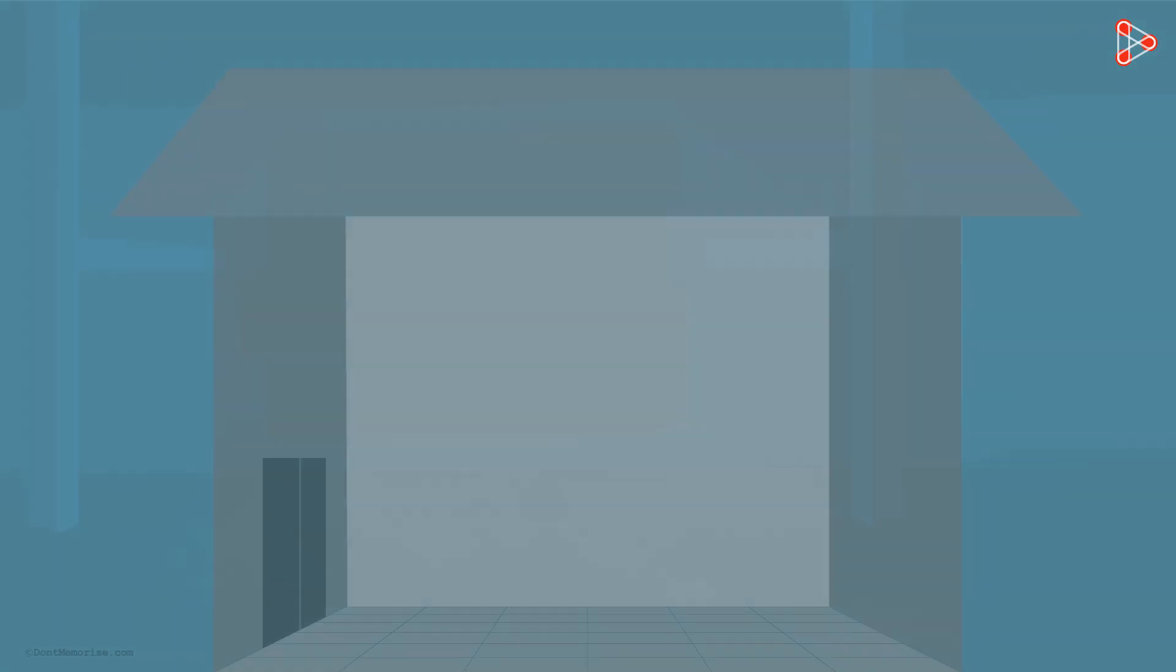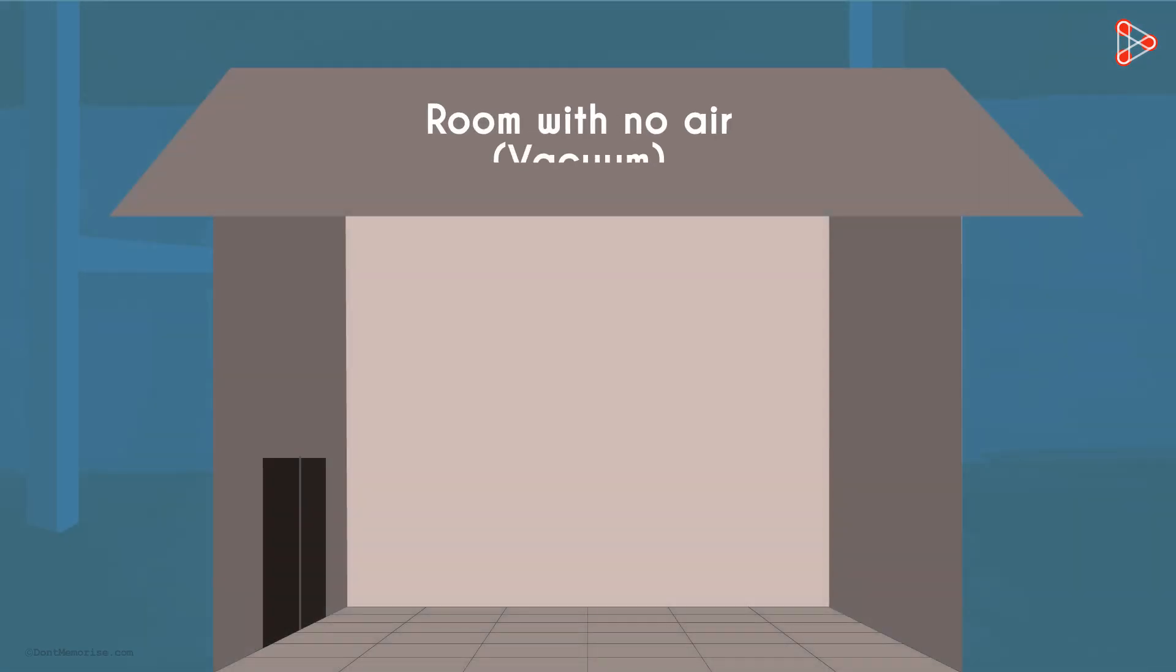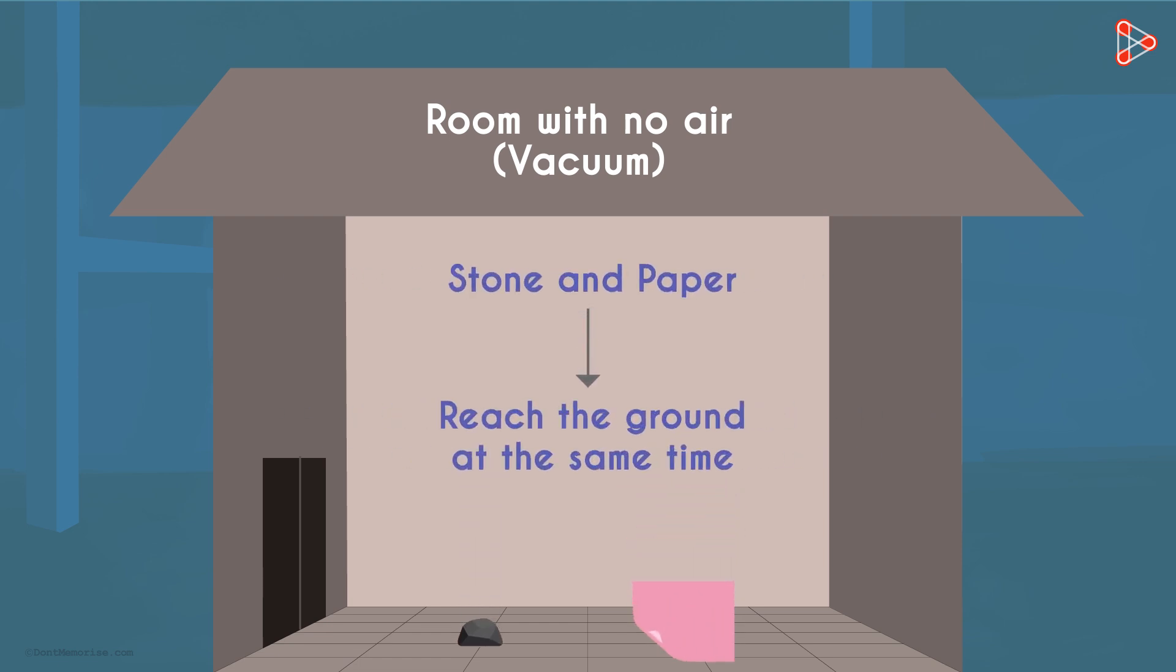For a moment, let's imagine a room with no air. It's vacuum. Now from the ceiling of the room, if a stone and a paper are dropped, will they fall to the ground at the same time? The answer is yes. They will reach the ground at the same time because there is no air to offer resistance.